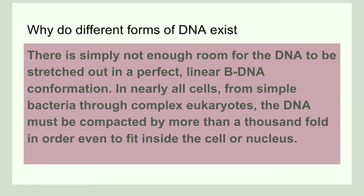We will discuss why these forms of DNA exist. We know that from a small bacterium to a eukaryote, the DNA is compactly arranged within a nucleus or cell — it is thousand-fold compacted to fit within a nucleus. So there is not enough room for DNA to stretch out in a perfect linear B-DNA form.